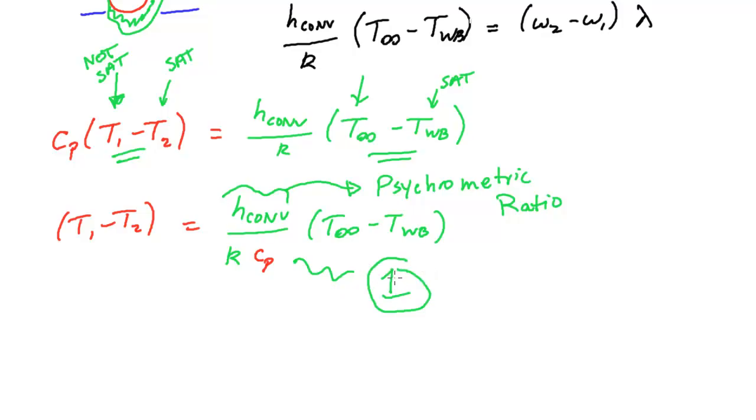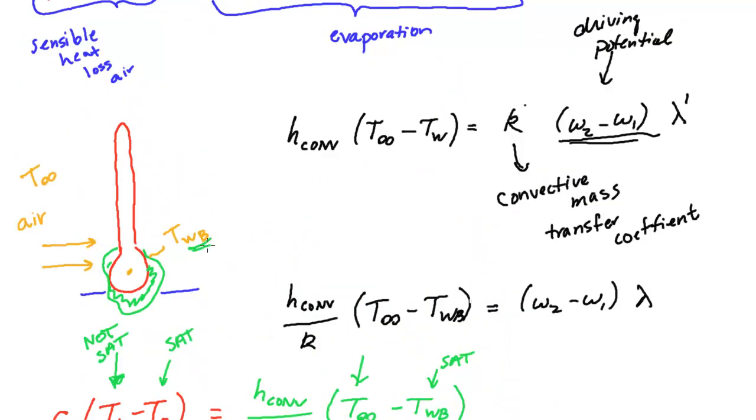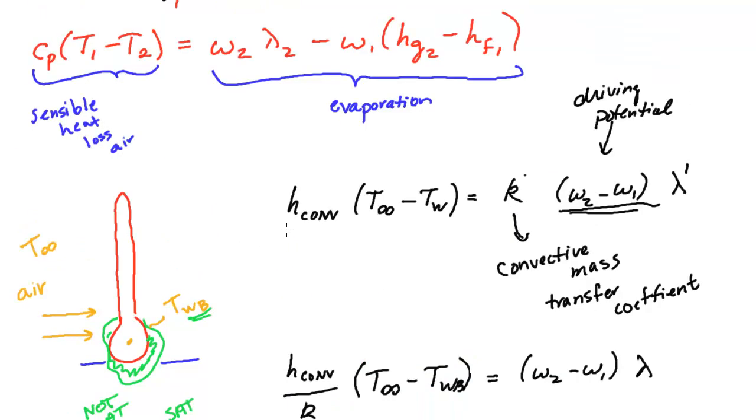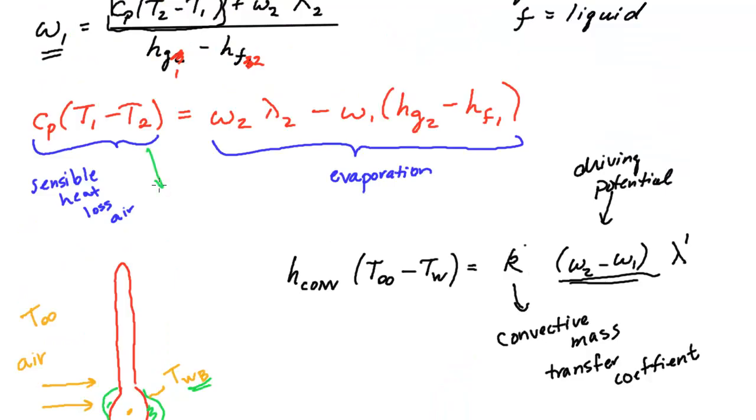And so this is why we can, in principle, just take this wet bulb temperature and equate it to what that adiabatic saturation temperature was.